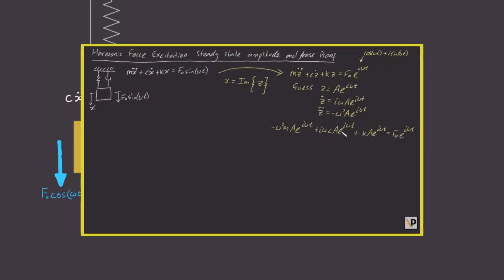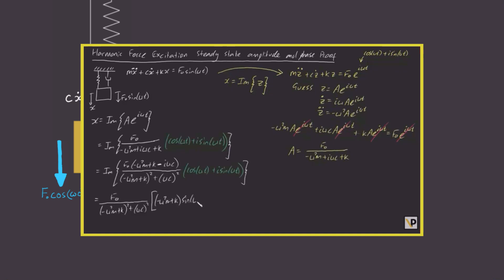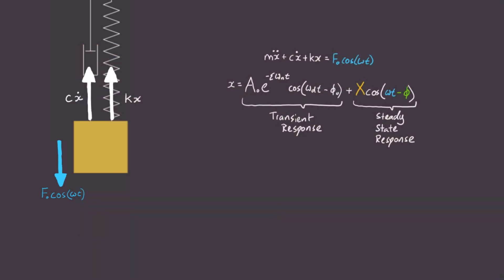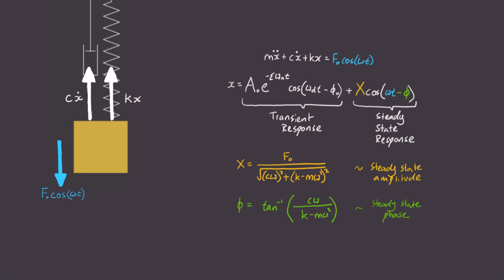I've already made a video showing how we can solve for these terms. But the end result is this. Capital X is equal to this expression, and phi is equal to this expression. They are called the steady state amplitude and steady state phase, respectively.